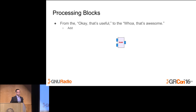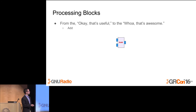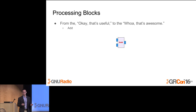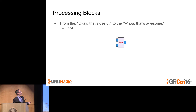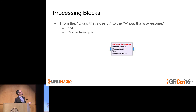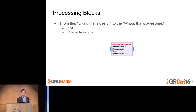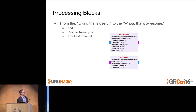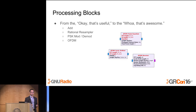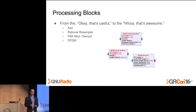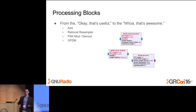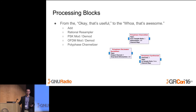We have a lot of processing blocks that are really awesome. They range from extremely simple things like add blocks, to rational resamplers, PSK modulation and demodulation, OFDM, and polyphase channelizers. There's a huge amount of stuff included in the GNU Radio core distribution. You can do anything from low-level math to dropping in an OFDM modulator to create an OFDM system.